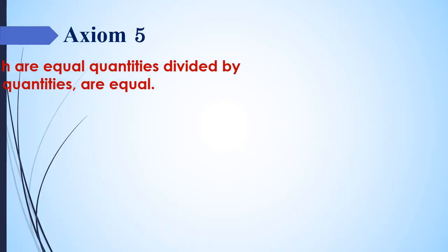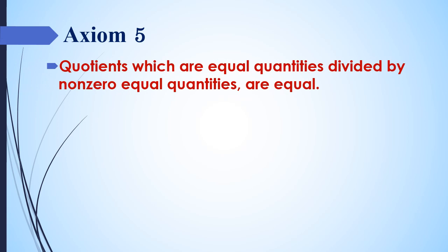Axiom number 5: Quantities which are obtained by dividing equal quantities by non-zero equals are equal. Here, non-zero means values which are not equal to zero. According to the example, if A equals B, then when dividing both A and B by C, the results are equal.